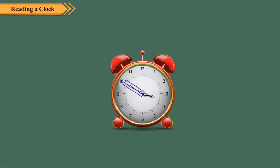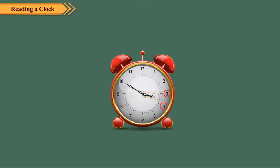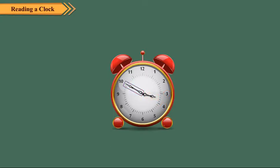Observe this clock. Here, the minute hand is at 10. It means 5 × 10 equals 50 minutes have passed. The hour hand is between 3 and 4. So, we can write the time as 50 minutes past 3. But, as a convention, when the minute hand is in the second half hour, we use the word 'to.' So, we consider the number of minutes to the next hour. The minute hand has yet to travel 10 minutes to reach the next hour, which is 4. So, we write the time as 10 minutes to 4.